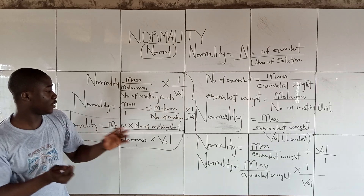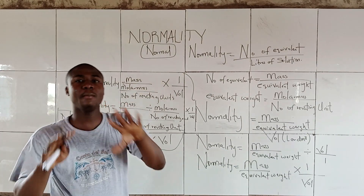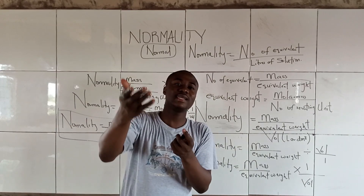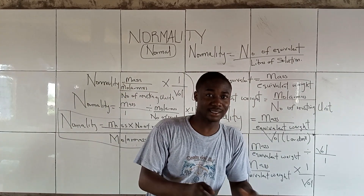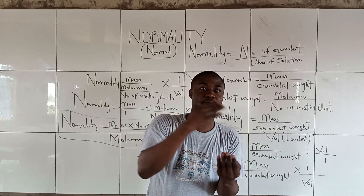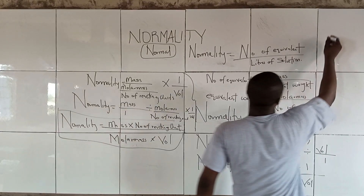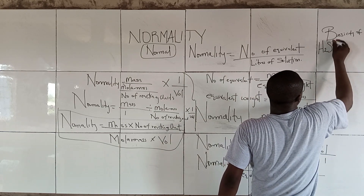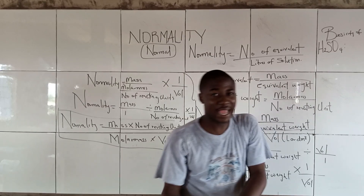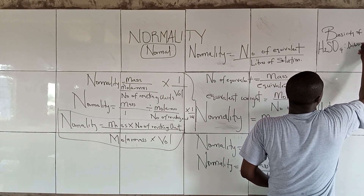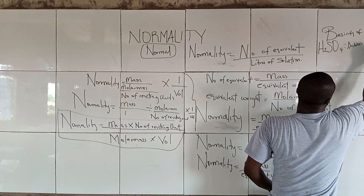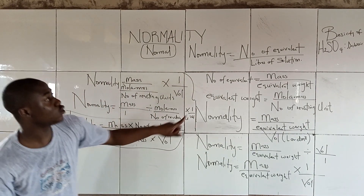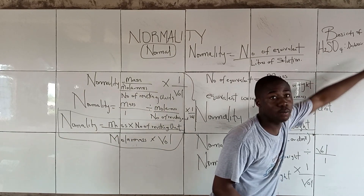Now the question we ask ourselves: what is number of reacting units? Number of reacting units is simply the number of constituent species taking part in a reaction — it's like the basicity of an acid. For example, H₂SO₄ is dibasic, so its number of reacting units equals 2.